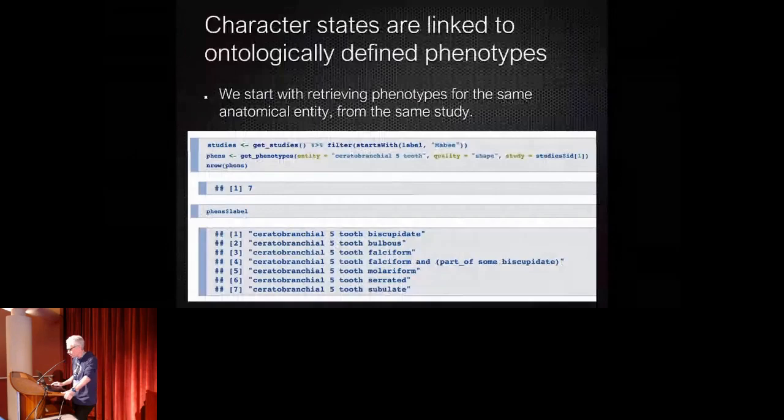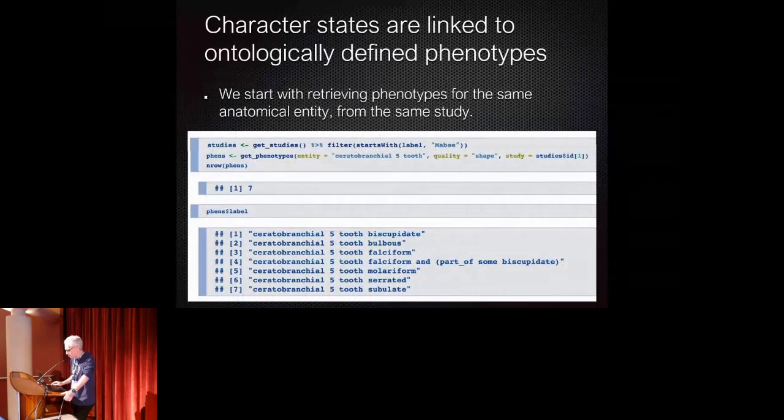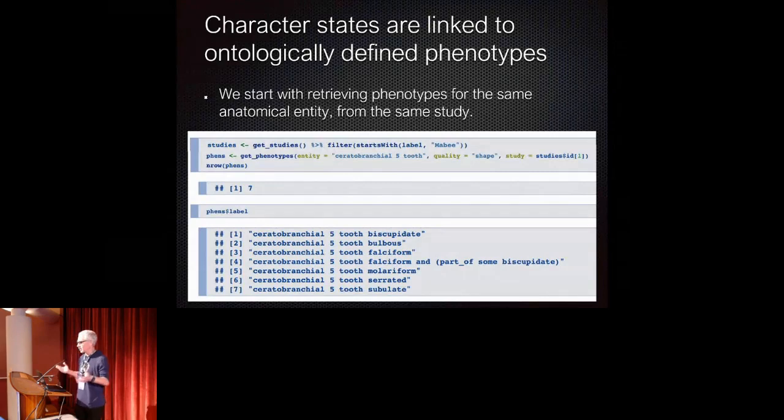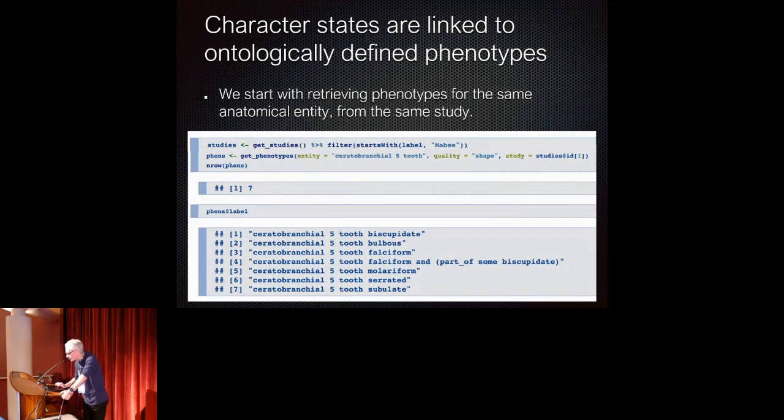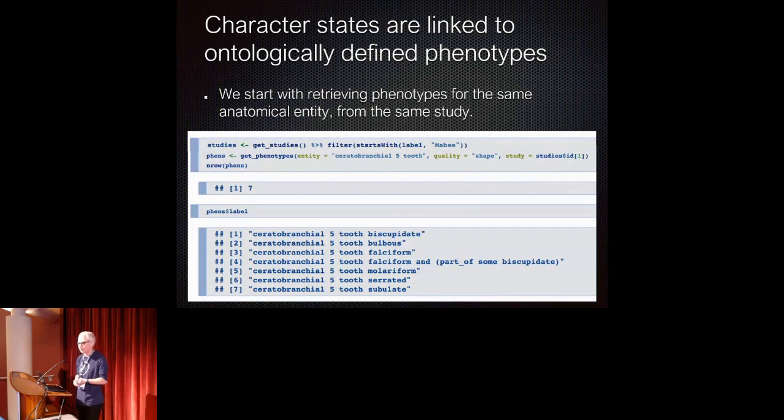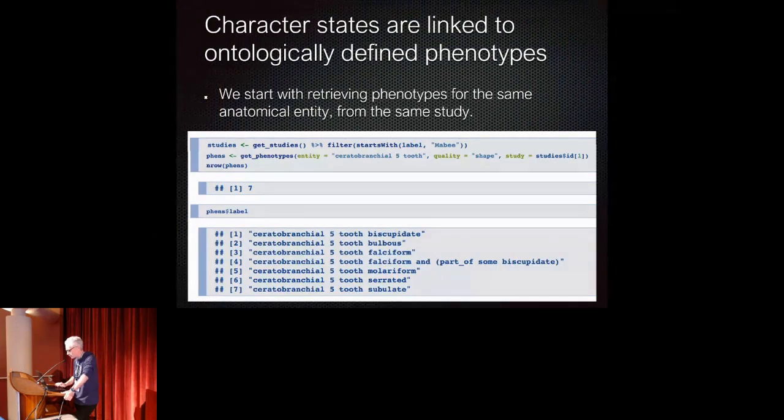And so let's go into some code here. So starting character states, as I just said, they're linked to ontologically defined phenotypes. And so here, I start with obtaining a study, and then I can get phenotypes from the knowledge base using the semantics-based filtering. So there are no phenotypes directly annotated in natural text to ceratobranchial five tooth, comma shape or something. That gets translated into ontology terms, and then uses the index of the ontology terms to pull out the respective phenotypes.